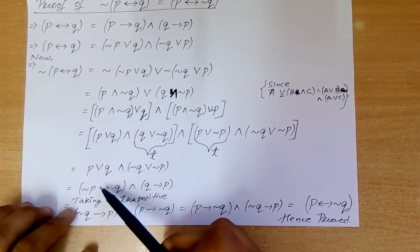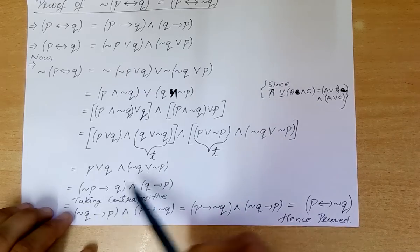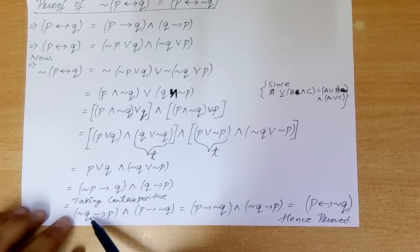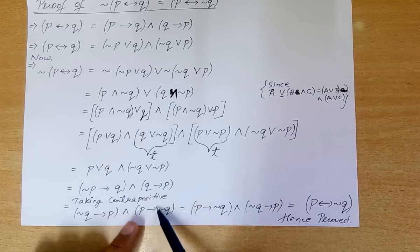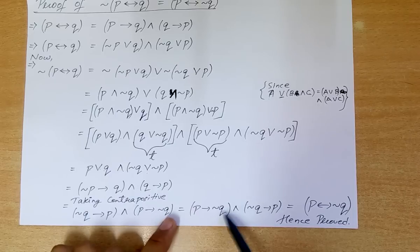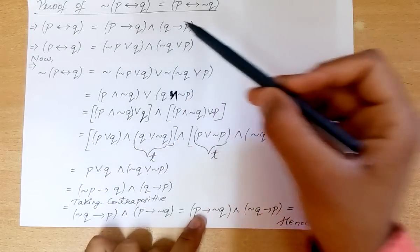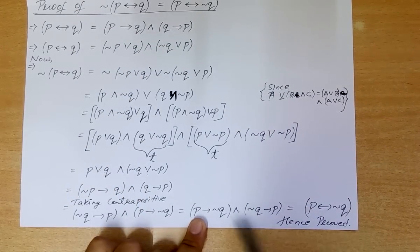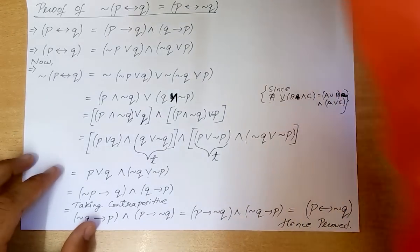Now, just as we converted P implies Q to negation of P or Q, we can convert P or Q to negation of P implies Q, and Q implies P. Taking the contrapositive — which doesn't change the statement — we get negation of Q implies P and P implies negation of Q. Shuffling these, we get P implies negation of Q and negation of Q implies P, which by definition gives us P if and only if negation of Q. Hence it is proved.